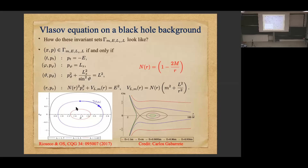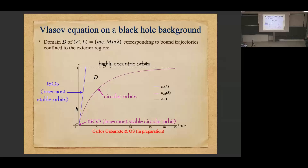We're going to assume each gas particle moves on a bound orbit. This gives some restriction about E and L. The energy has to be smaller than one — above that they go to infinity. The minimum energy for Schwarzschild is at the innermost circular orbit, which is √(8/9) times the mass. If E and L are inside the domain D, you get a bound orbit in the exterior region. This boundary corresponds to circular orbits, and the blue curve corresponds to the ISCO — the innermost stable circular orbit.